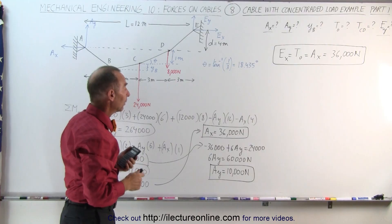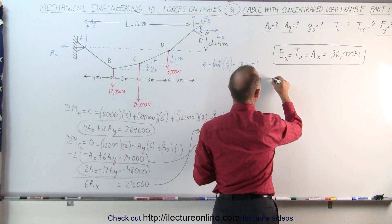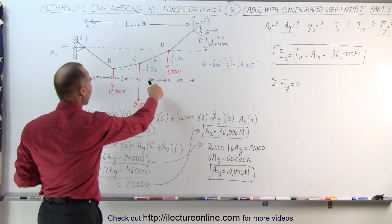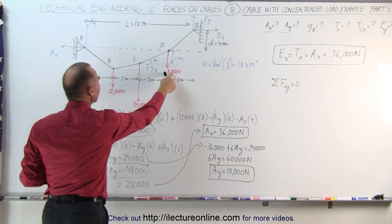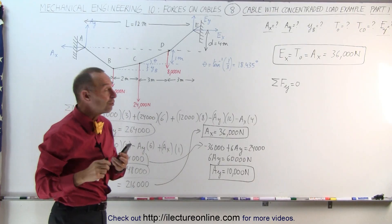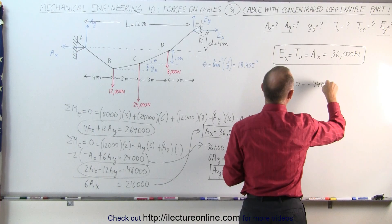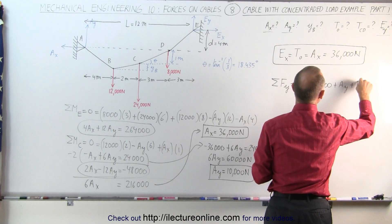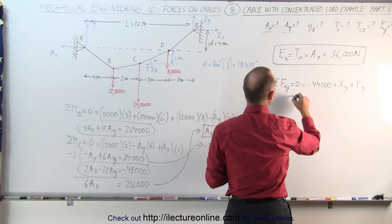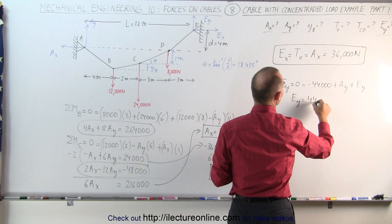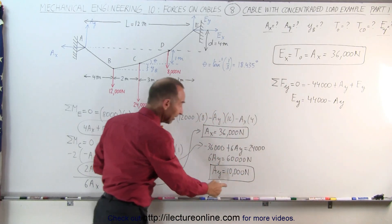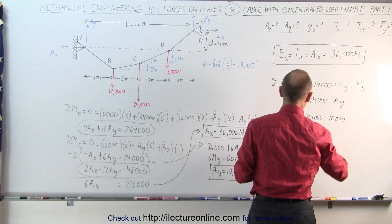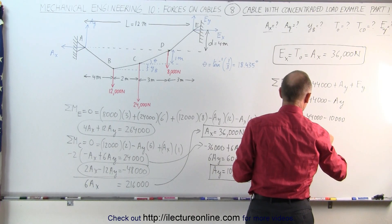The last thing we need in part one is E sub Y. To find it, we sum forces in the Y direction, which equals zero. The three load forces all act downward: 8,000 plus 12,000 is 20,000, plus 24,000 is 44,000, so negative 44,000 newtons. Adding A sub Y and E sub Y to this: E sub Y equals 44,000 minus A sub Y equals 44,000 minus 10,000, so E sub Y equals 34,000 newtons.